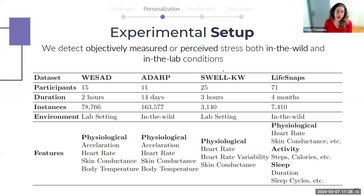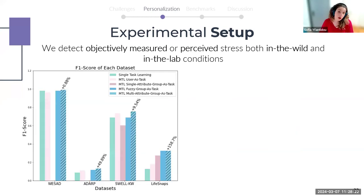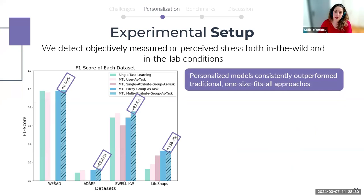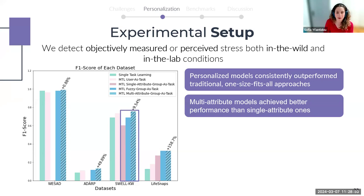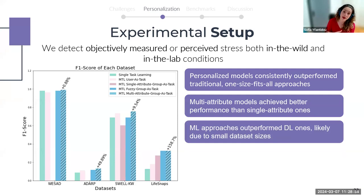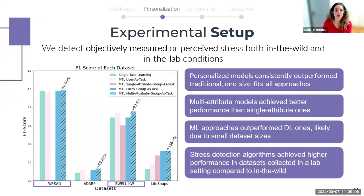Our results indicate that personalized models consistently outperform traditional one-size-fits-all approaches in terms of F1 score. Multi-attribute models — where we define groups of users based on multiple objectively measured sensor data — perform better than single-attribute models where we define groups based on personality only. Overall, machine learning algorithms perform better than deep learning ones, possibly because of the small size of ubicomp datasets. Perhaps not surprisingly, stress detection algorithms operate much better in lab conditions compared to in-the-wild settings.